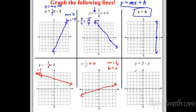The last example is y equals 3 minus x. If there's nothing written in front of x, that means it's 1x — don't freak out. So b is 3, start there. The slope is negative 1, which as a fraction is negative 1 over 1. Go down 1 over 1 repeatedly; you can also go back up 1 and back 1 in the other direction. Draw a straight line through your dots. It's a negative slope, so a downhill line — good to go.